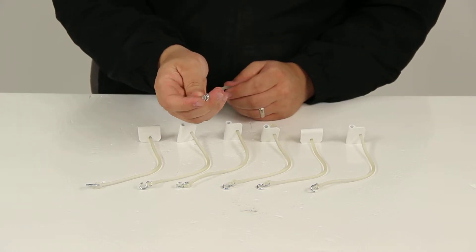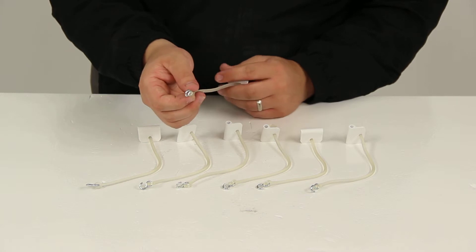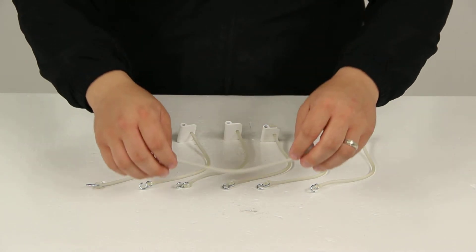Each one has a metal hook attached that hangs from the end of the lanyard to cradle your light strand. And again, 7 holders are included.